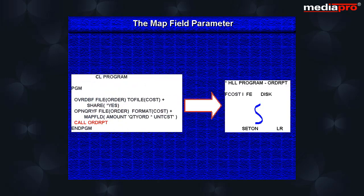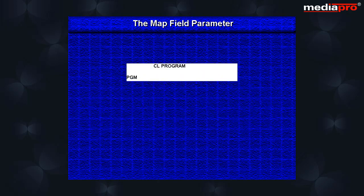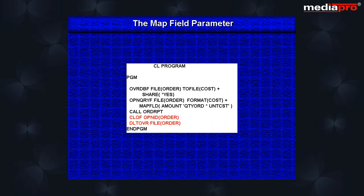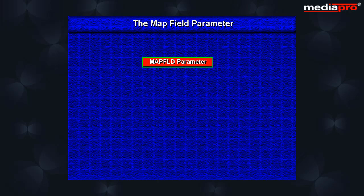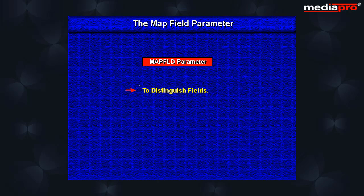Now we can call the application program. Remember to close the file and delete the override when the application terminates. The map field parameter can also be used to distinguish a field when the same field exists in multiple record formats that are part of a dynamic join, or to perform data aggregation such as obtaining the total of a particular field.